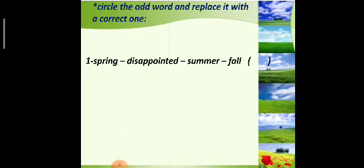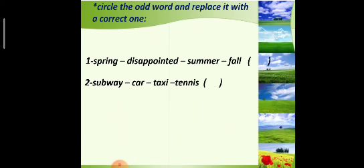The first question is: circle the odd word and replace it with the correct one. Number one: spring, disappointed, summer, fall. Spring, summer, and fall are the seasons of the year, but 'disappointed' is an adjective, so it's the odd one. The replaced word will be 'winter.'